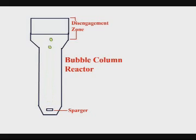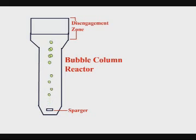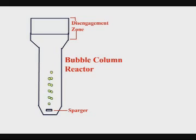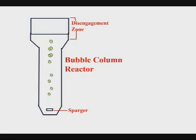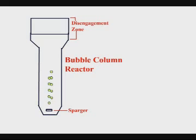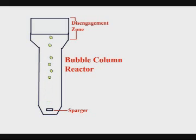Bubble-driven fermenters are generally tall, with a liquid height-to-base ratio between 8:1 and 20:1. The tall design leads to high gas holdup, long bubble residence time, and high hydrostatic pressure near the sparger at the base of the fermenter. These factors lead to high values of KLA and saturation of oxygen, thus enhancing the oxygen transfer rate.